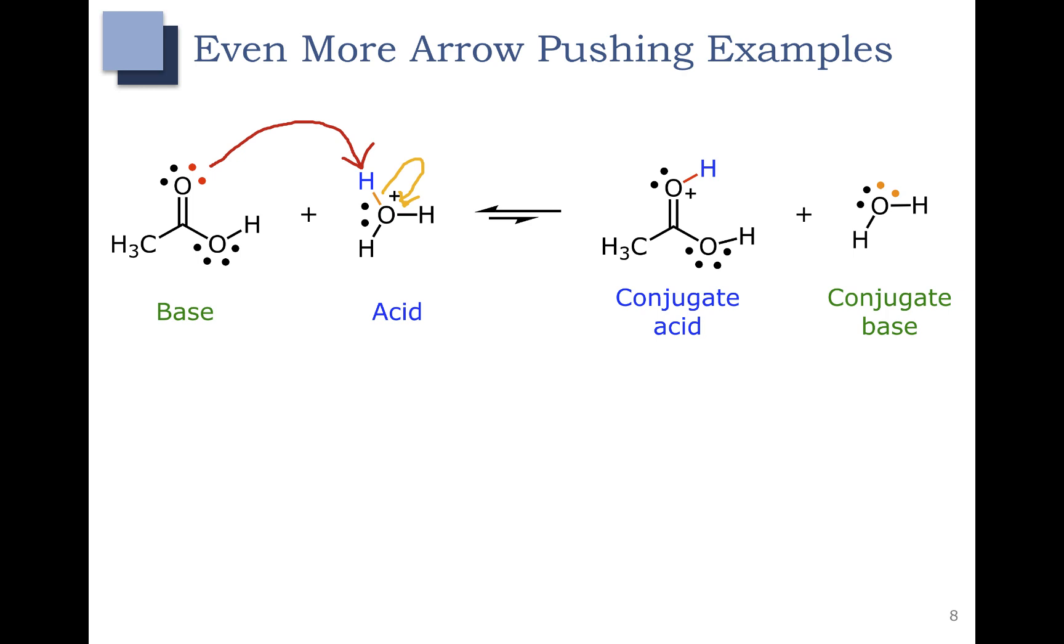And if we remember from Bronsted-Lowry definitions, our base is accepting a proton, which makes sense, and our acid is donating the proton. So all of that's good. Also notice that our charges balance, we have a positive charge on the left, and a positive charge on the right.